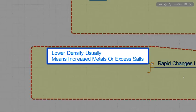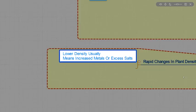Lower density. Usually means increased metals or excess salts. So basically you're looking at lower density of plants. They're dying off. That means there's more metals, more salts. Therefore there's more possibility that there might be a gold deposit nearby.